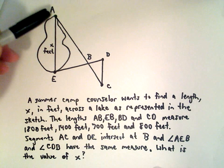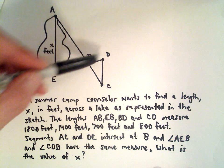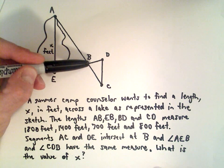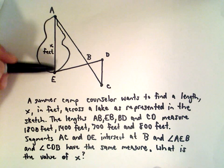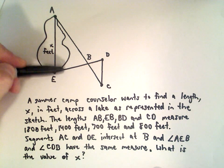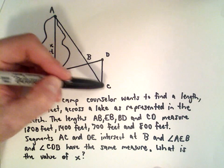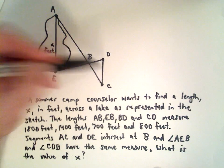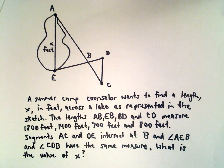Segments AC and DE intersect at point B. We're given that angle AEB, which is this angle here, and angle CDB, which would be this angle here, have the same measure. We want to figure out what's the value of x.